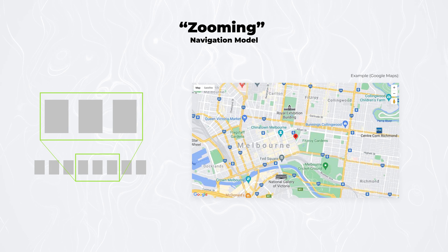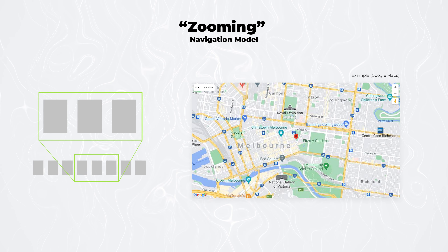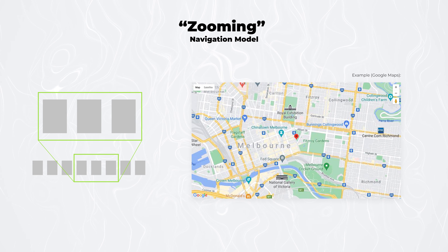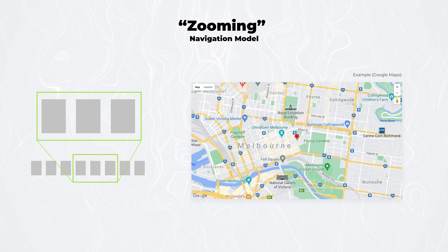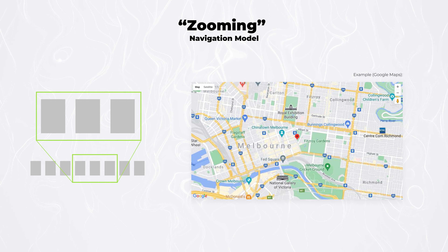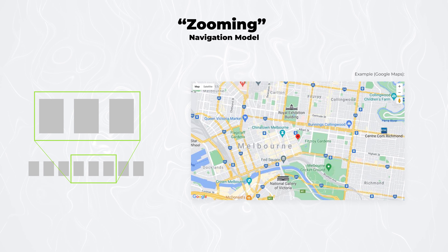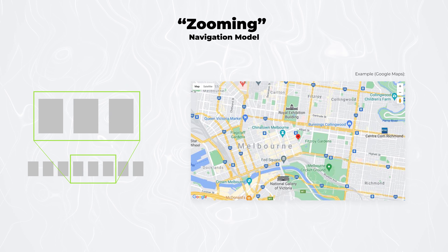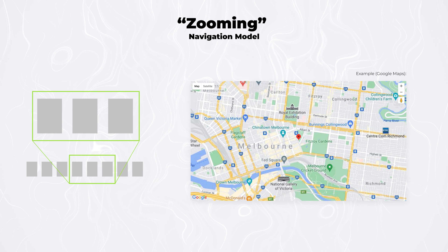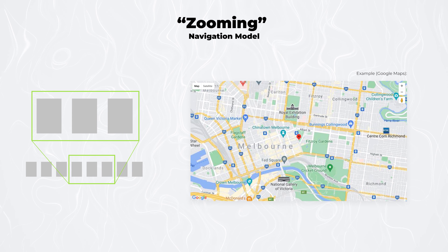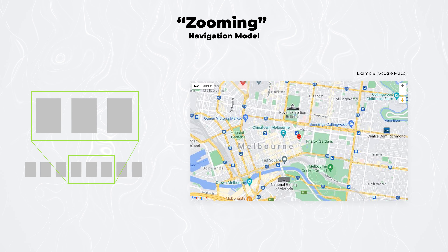The last type of navigation model is zooming. Most of the time you can find it in various apps that deal with large elements like graphics, photos, or maps. When dealing with those large items, it would be hard to perform certain actions on them unless we provide the ability to zoom in or out, depending on the level of detail that the user needs.